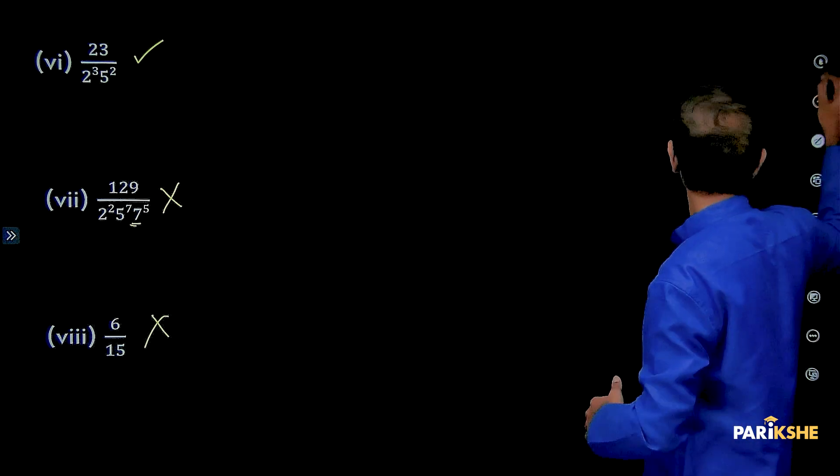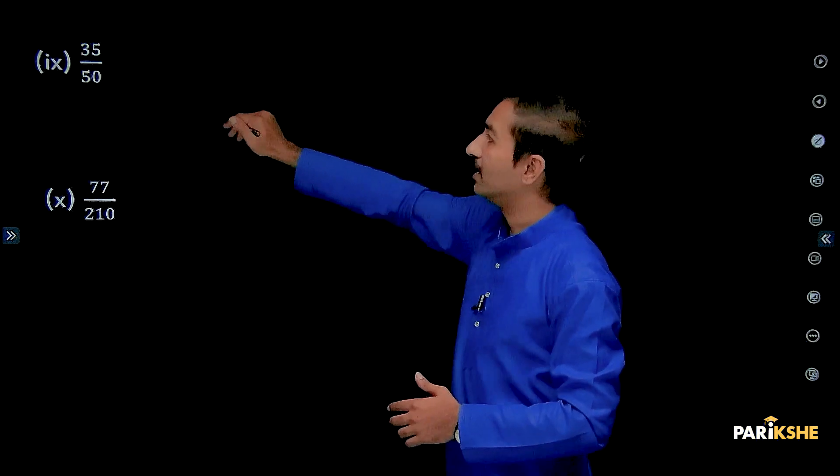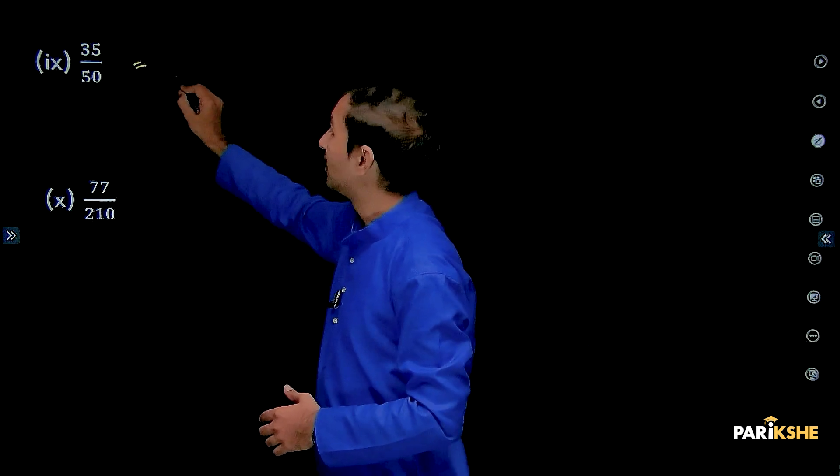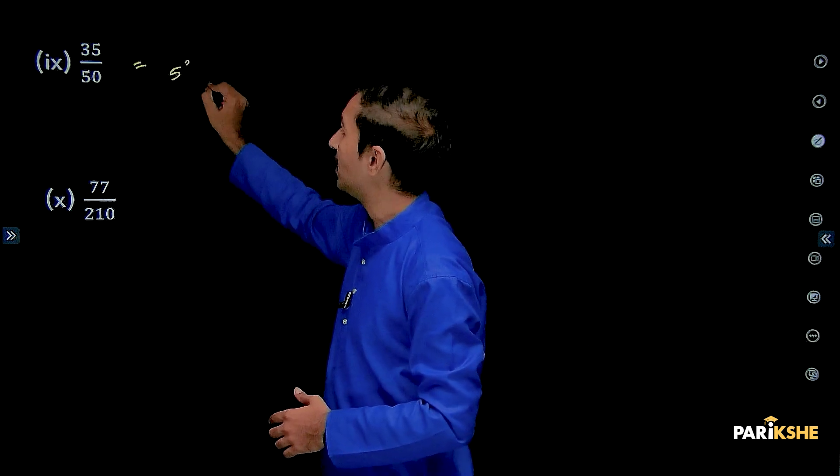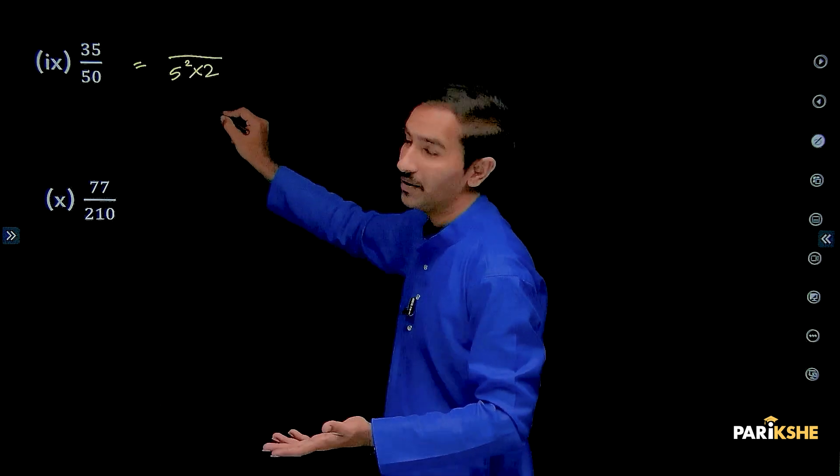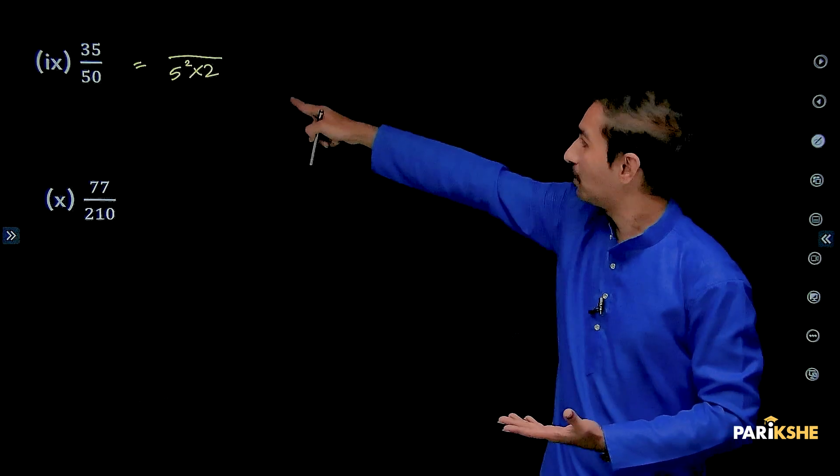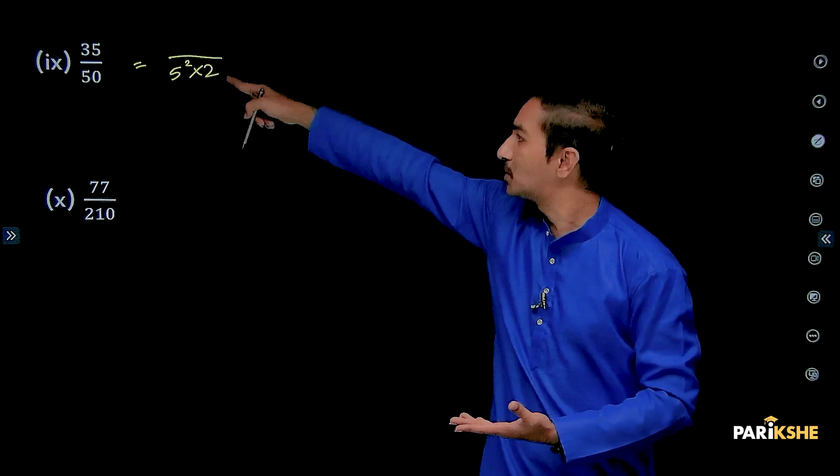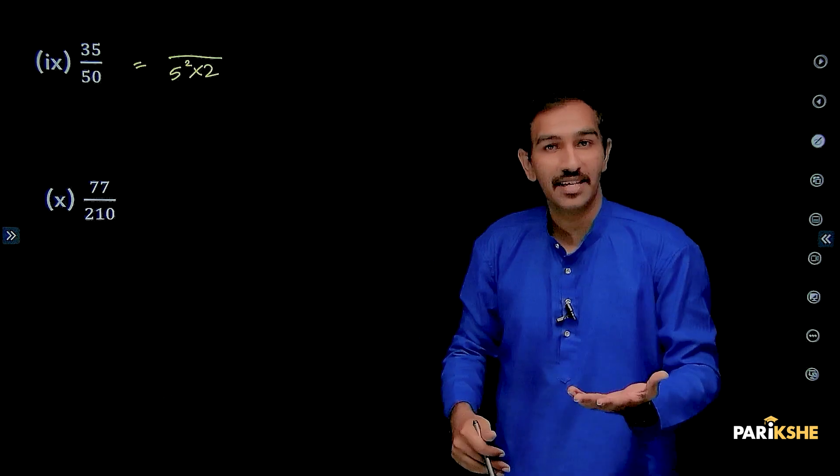8th question say, next, 23/50. Agathe idhu, 25 2s andhre, 5 square into 2, 5 square and the rest 25, 25 2s are 50, terminating, yakke, 2 to the power of n, 5 to the power of m. The fraction decimal expansion is terminating.